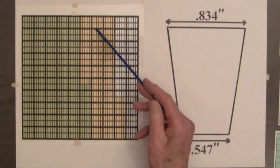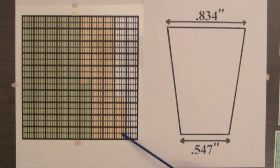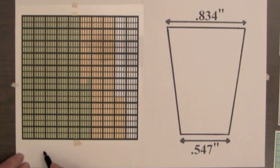This difference is the yellow shaded amount that is left. And this difference is 834 thousandths minus 547 thousandths.